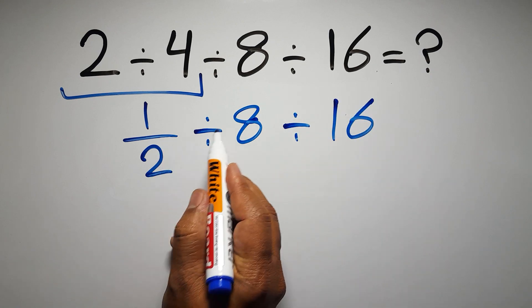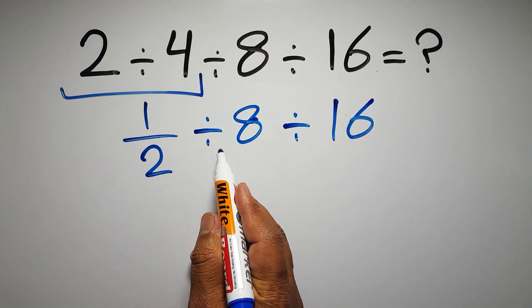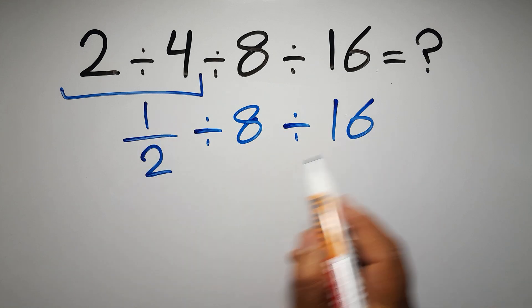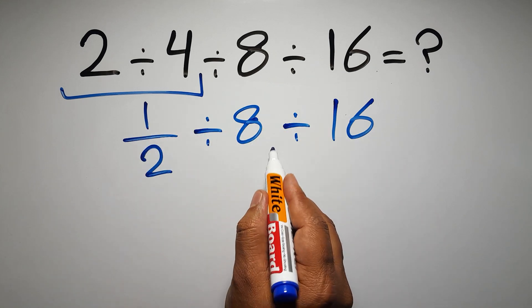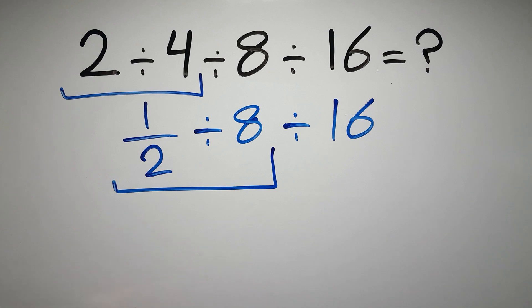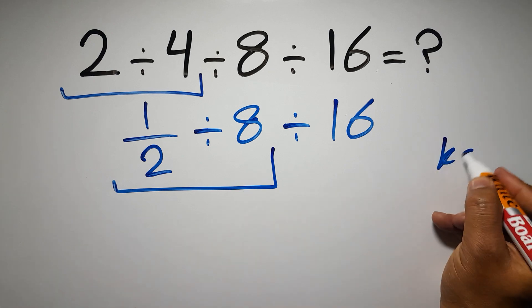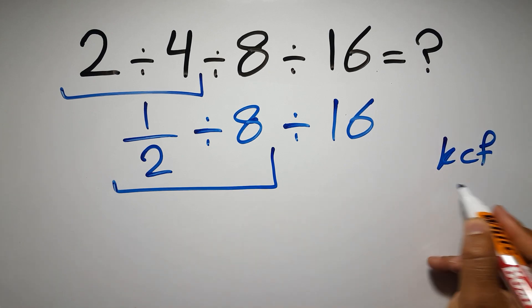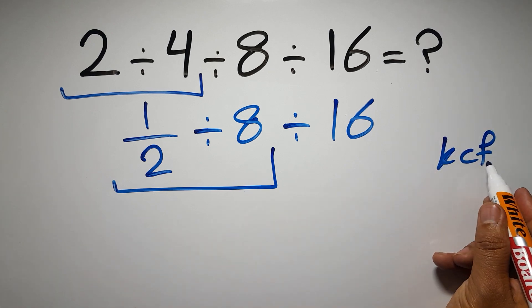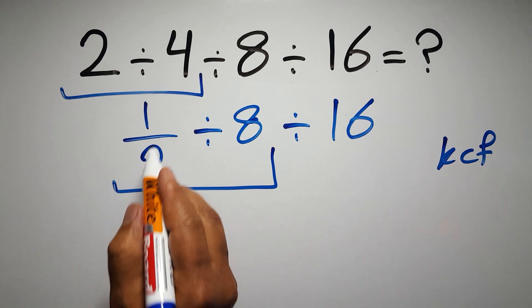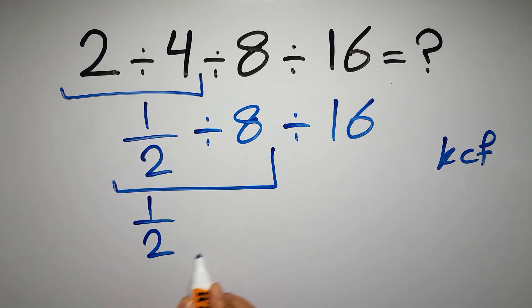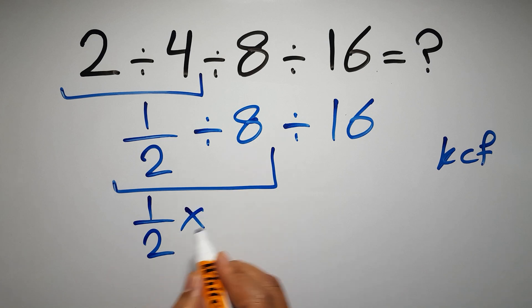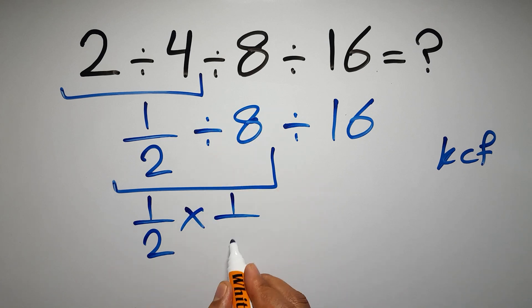No — first we have to do this division, because we have to work from left to right. So first: 1 over 2 divided by 8. According to the KCF rule — K stands for keep, C stands for change, and F stands for flip — keep the first fraction, change division to multiplication, and flip the second fraction to get 1 over 8.